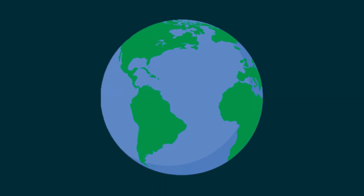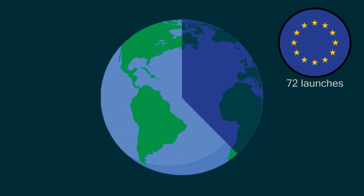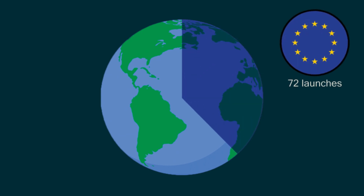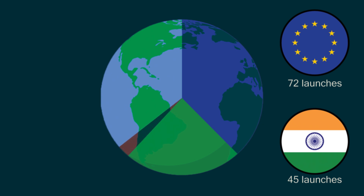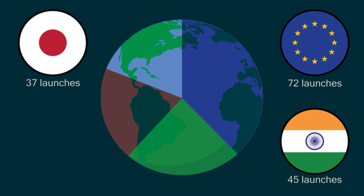Out of the remaining countries, the European Union makes up most of these with 72 launches, followed by India with 45, and Japan with 37. Most other countries have anywhere from a few to maybe 10 rocket launches in total, but ultimately the main competitors are Russia, the United States, and China.